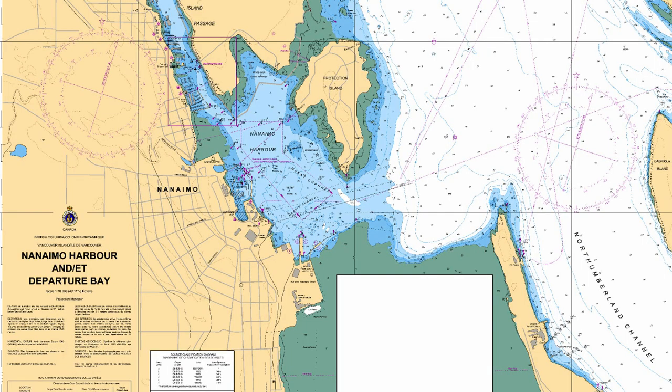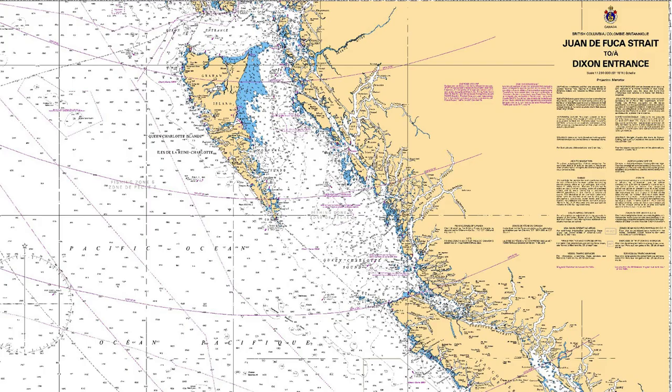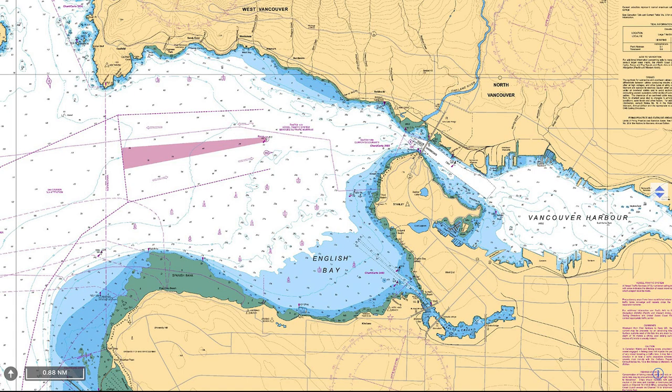Another way to look at it is that large scale charts zoom in, so details are larger. Small scale charts cover large areas and are used for planning purposes or navigating in open water. Large scale charts are used when more information is needed, such as when approaching land or cruising inshore. The closer to land and the more congested the navigational area, the larger the scale of the chart being used should be.